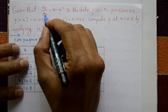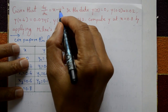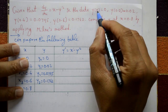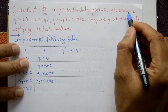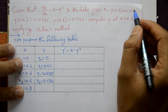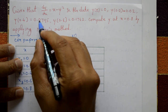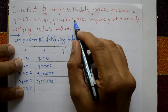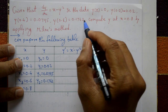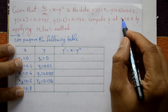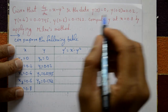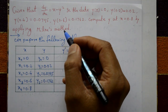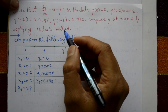Given that dy/dx is equal to x minus y squared, and the data: y(0) = 0, y(0.2) = 0.02, y(0.4) = 0.0795, y(0.6) = 0.1762. Compute y at x = 0.8 by applying Milne's method.